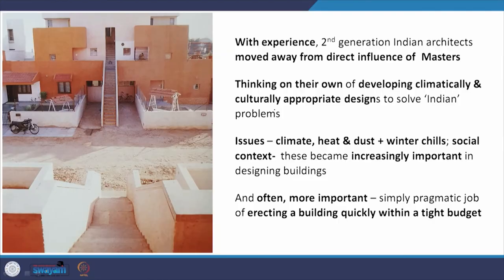When we look at first-generation works like Habib Rahman and others, we see a very direct influence, but as they move forward, even the first generation moves away from direct imitation to a kind of indirect impact. They began thinking on their own about developing climatically and culturally appropriate design to solve Indian problems — something that modernist architecture itself could not do; it was a faceless form all over the world. That does not take away the radical change it brought in building design globally — that contribution can never be understated — but there were typical Indian problems to be addressed. Issues like climate, heat, dust, winter chills, and social context became increasingly important.